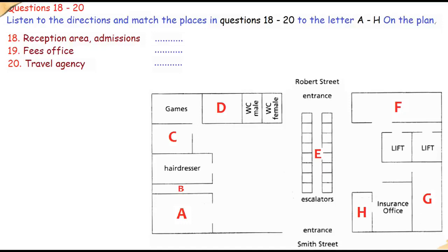Where can I buy books? The bookshop is opposite the lifts. It's right next to the entrance from Robert Street. Your offices are spread out. Not as badly as they used to be. By the way, we offer very competitive overseas travel rates to our students. I'd like to look into that. Of course. The travel agency is at the Smith Street end of the building, in the corner next to the insurance office. Thank you very much. Bye.